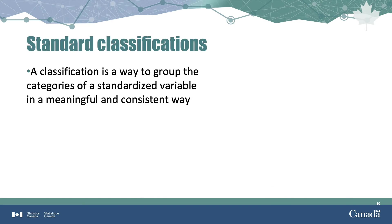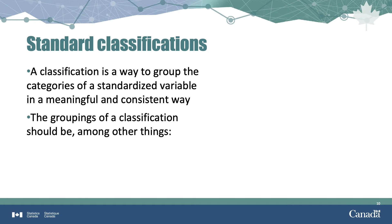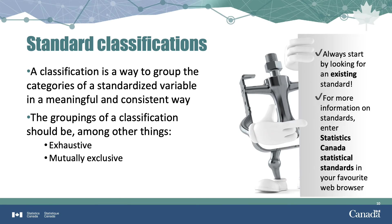A classification is a way to group the categories of a standardized variable in a meaningful and consistent way. For example, with age groups, if one researcher uses age categories spanning four years and another uses categories spanning ten years, it'd be hard to compare the results. However, if everyone agrees that age categories should span five years and abides by that, we call this a classification. The groupings should be exhaustive and mutually exclusive. Before you make your own groupings, it's good practice to check if there's a standard classification to use — there are many on Statistics Canada's website.